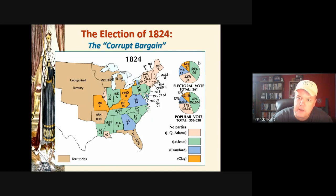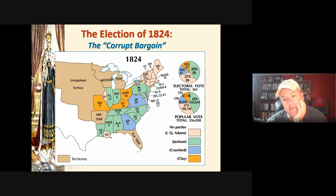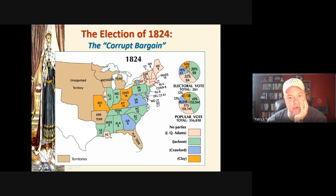No one received a majority of the electoral vote. Jackson had 38% — a plurality, not a majority. 62% of Americans had not voted for Jackson, but he had more than anybody else. The Constitution is clear: if nobody has a majority of the electoral vote, the House of Representatives will choose from the top vote-getters. Crawford had had a stroke, and Clay finished a distant third or fourth.